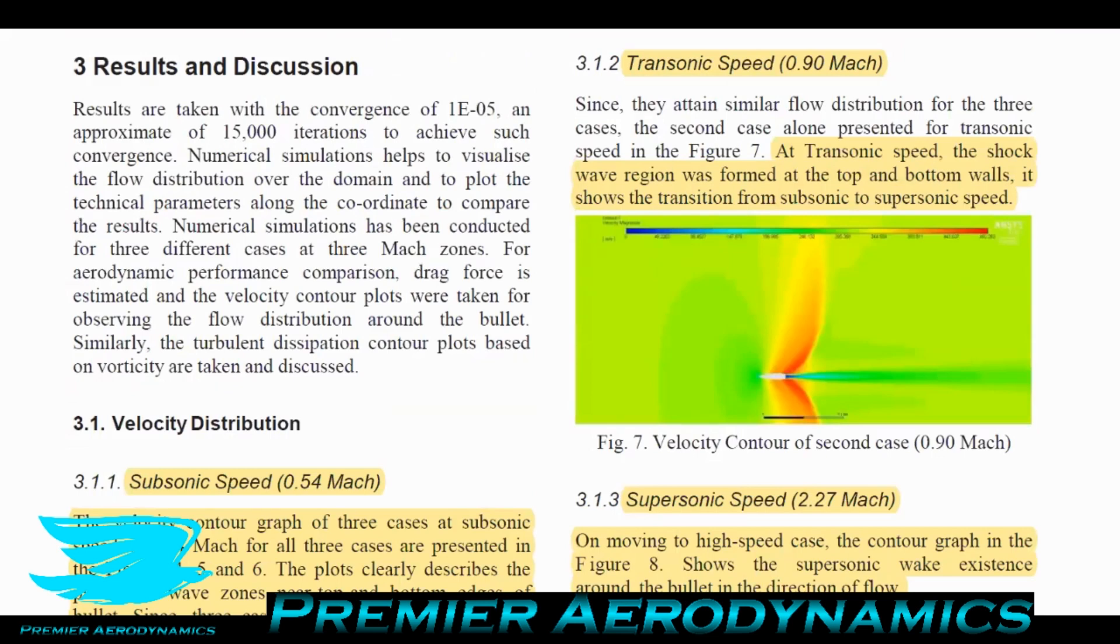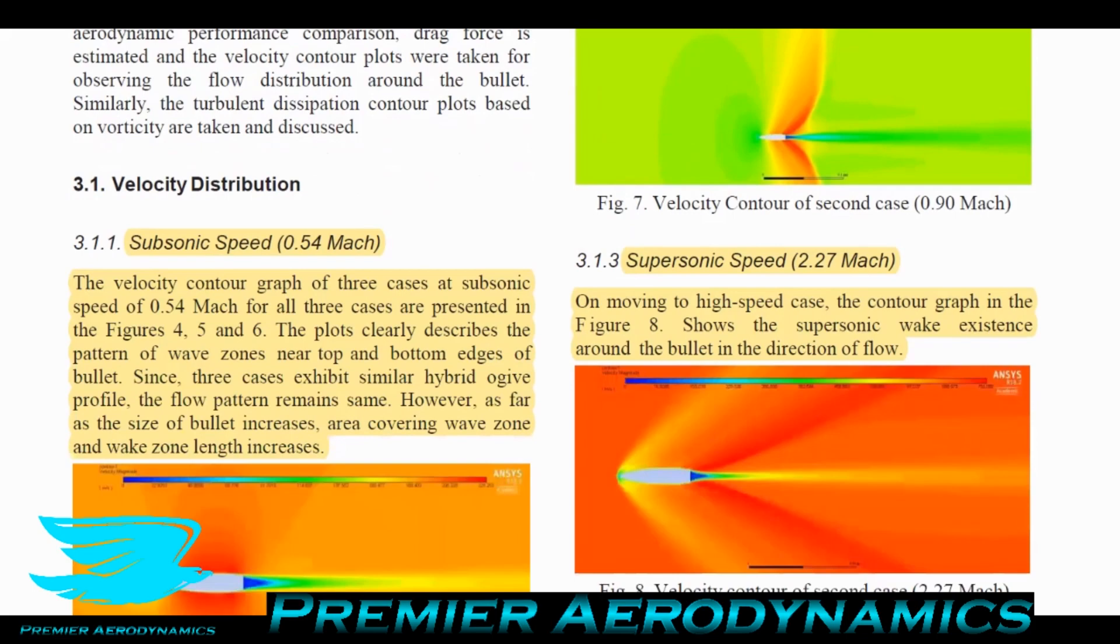At transonic speed of 0.9 Mach, the shock wave region forms at the top and bottom walls showing transition from subsonic to supersonic speed. From what I can tell, there's probably one shock at the back of the bullet where it's particularly thickest. That indicates when you're first going to get transonic flow. The bullet has curved a lot at this point so the flow is accelerating the most and is fastest in the rest of the flow.